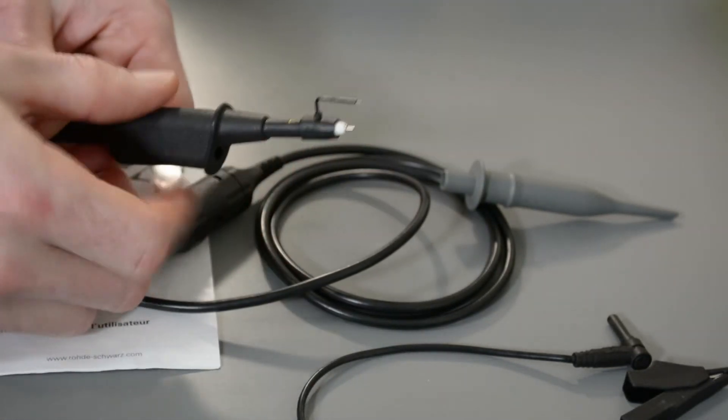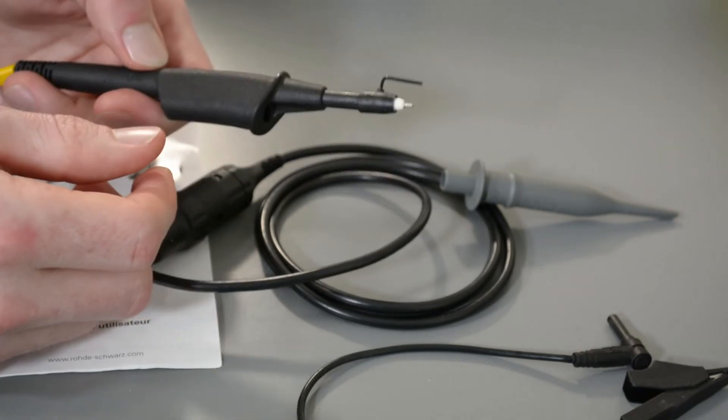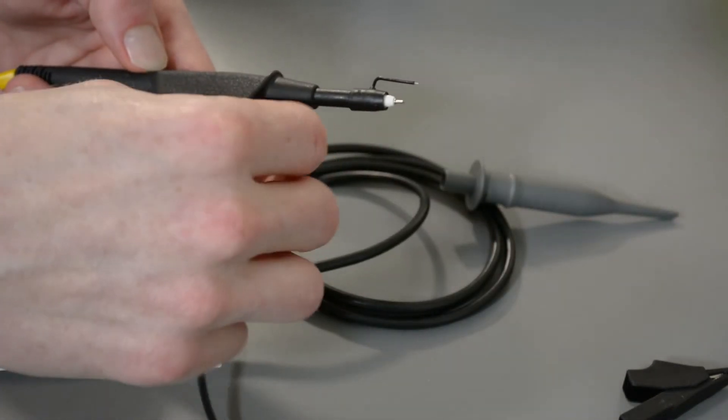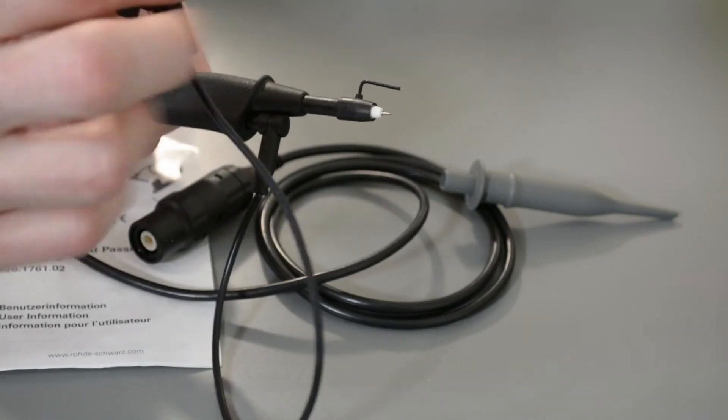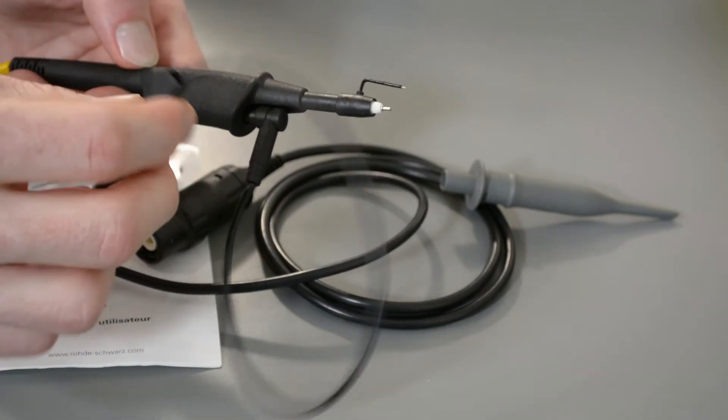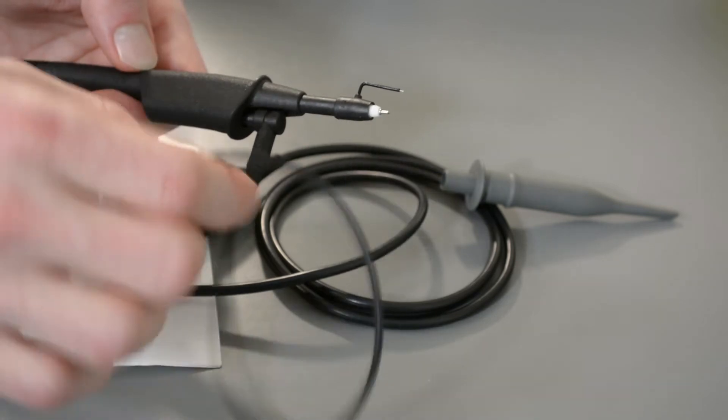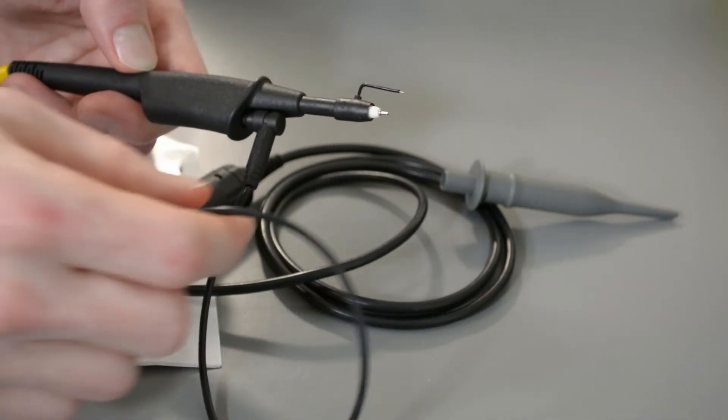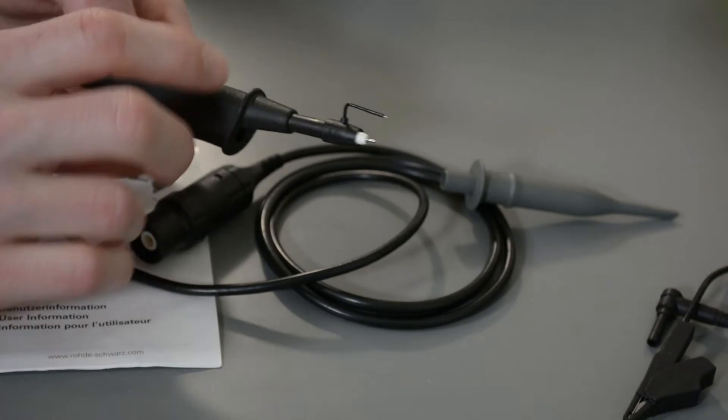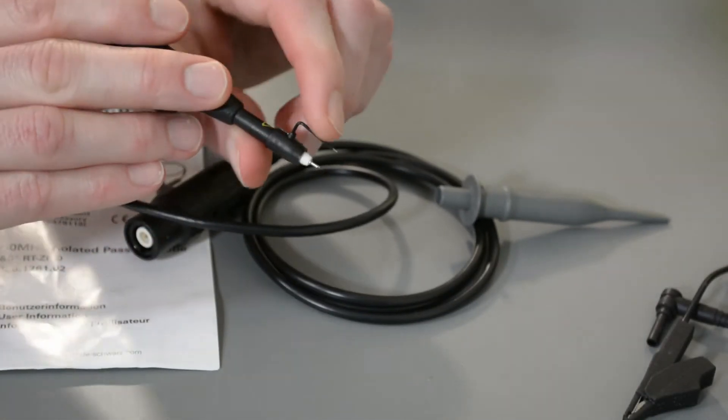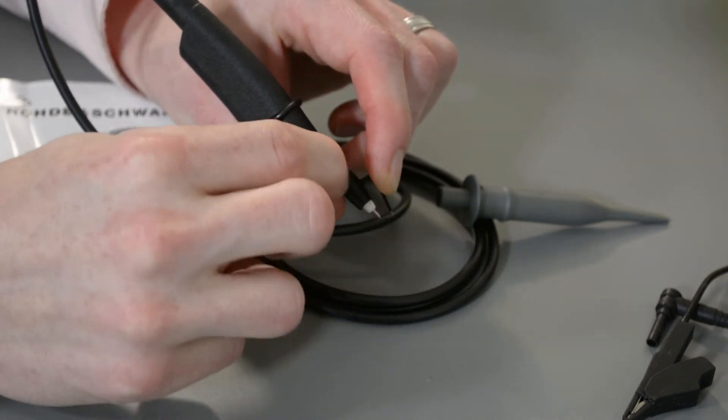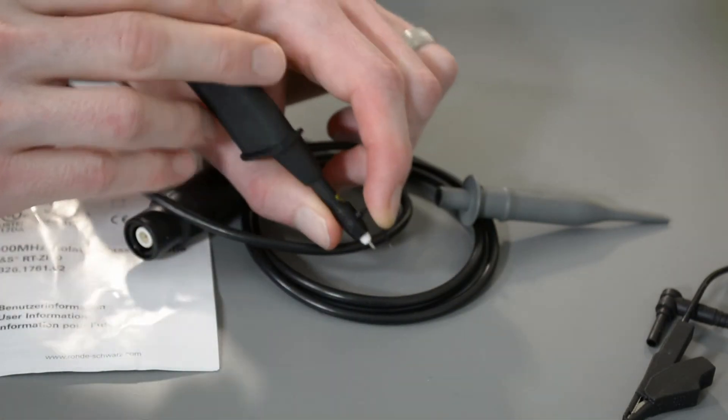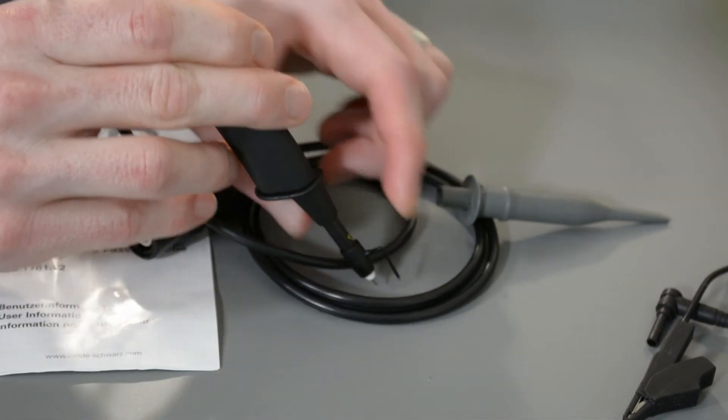Because when you're probing power supply circuits, if you have this loop in here, or anything that's high frequency, this ground loop picks up a lot of junk, so it doesn't work very well. Your signal is super noisy, so you want to get it like this, and then you can get down there and have a real short ground wire to get good signals.